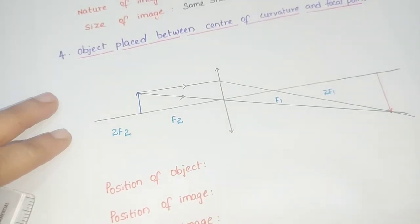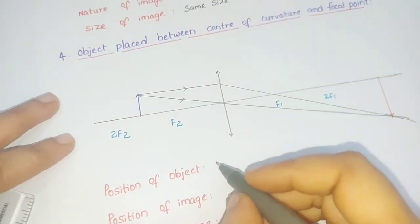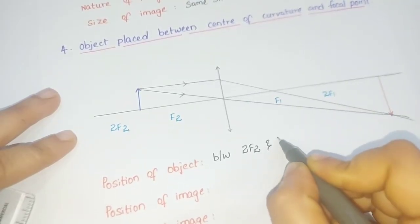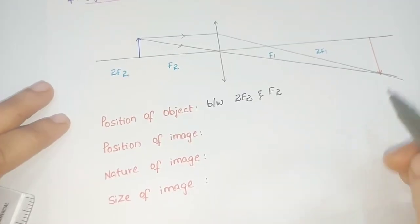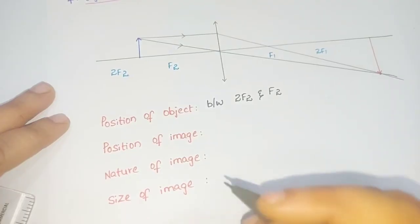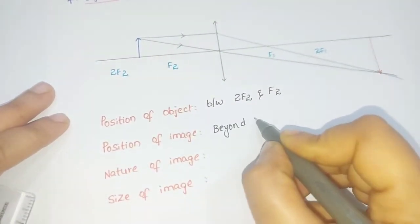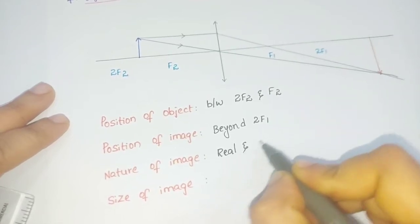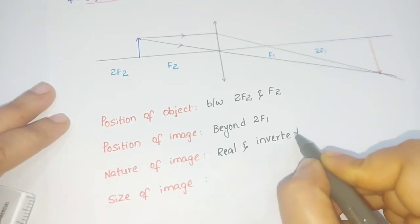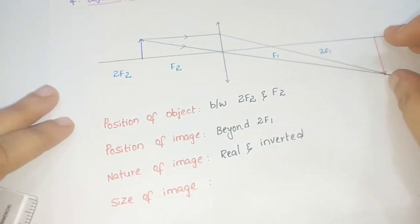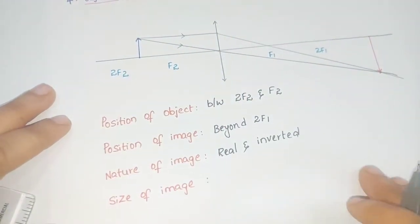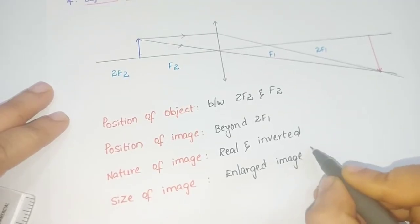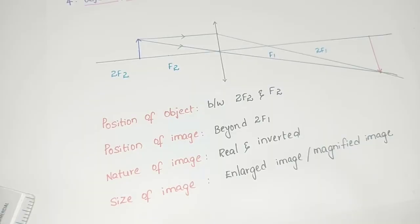Now we write the characteristics of the image. Position of object: between the center of curvature and the focal point. Position of image: the image is formed beyond the center of curvature, beyond 2F1. Nature of image: real and inverted. Size of image: the size of the image is larger than the size of the object — enlarged, or we can say magnified.